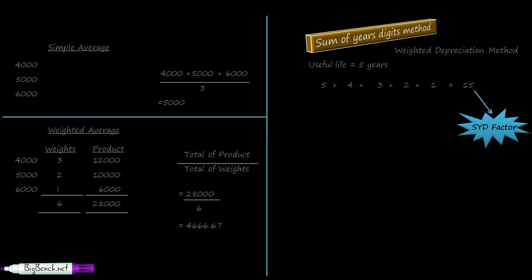When the useful life is 15 or 20 years, calculating the SYD factor by addition is time-consuming. A shortcut formula is: n × (n+1) ÷ 2, where n equals the useful life. Substituting n=5 gives 5×6÷2 = 15, which is the SYD factor. If you forget this formula, you can always add all the digits to get the same answer.